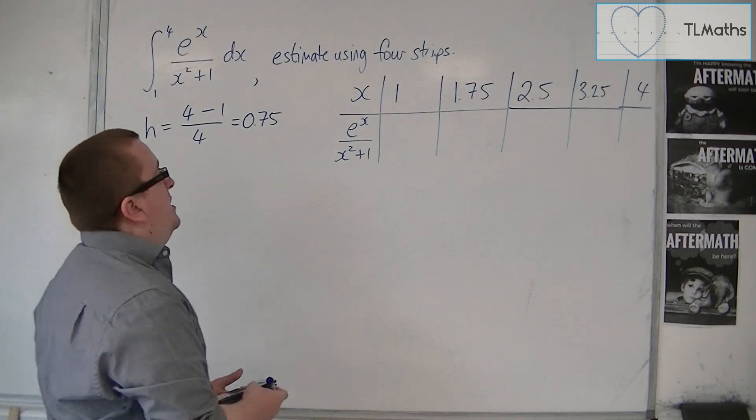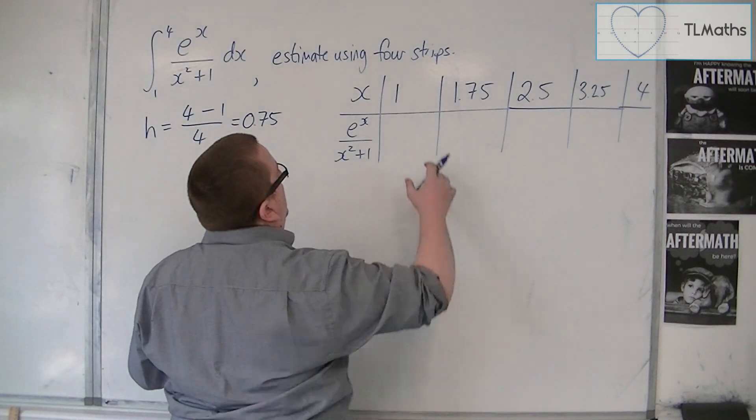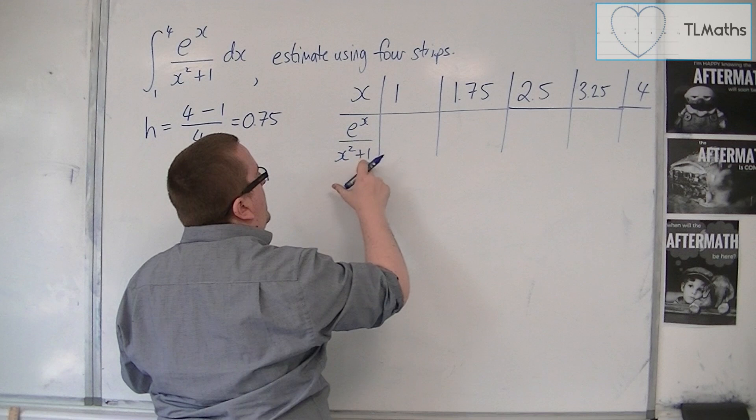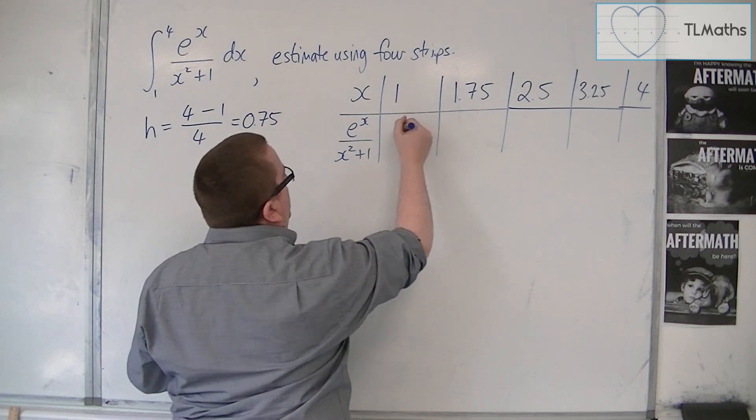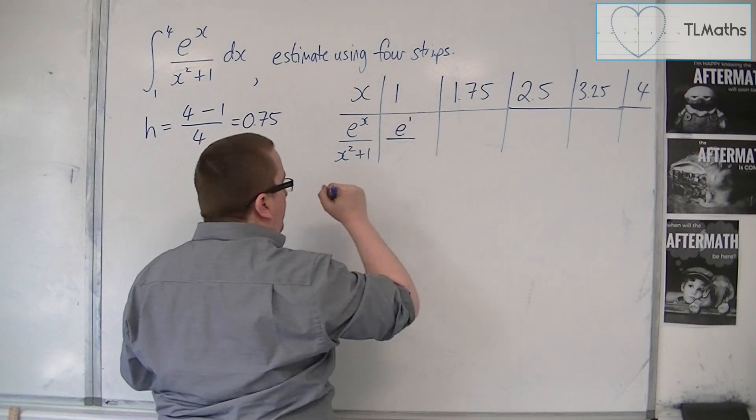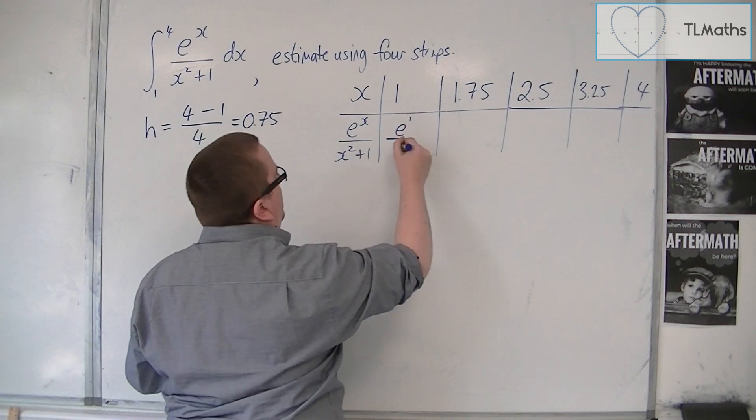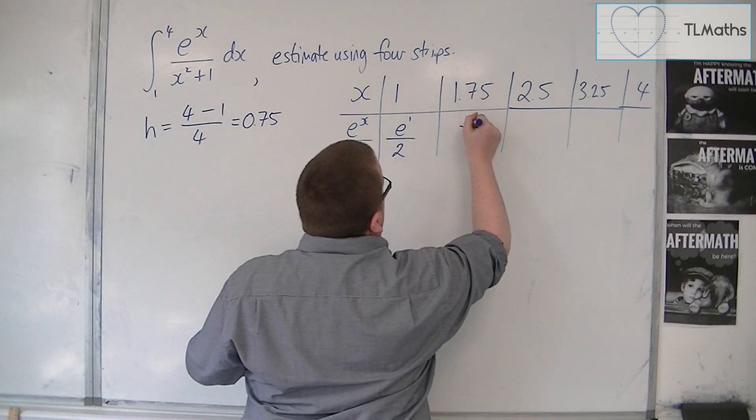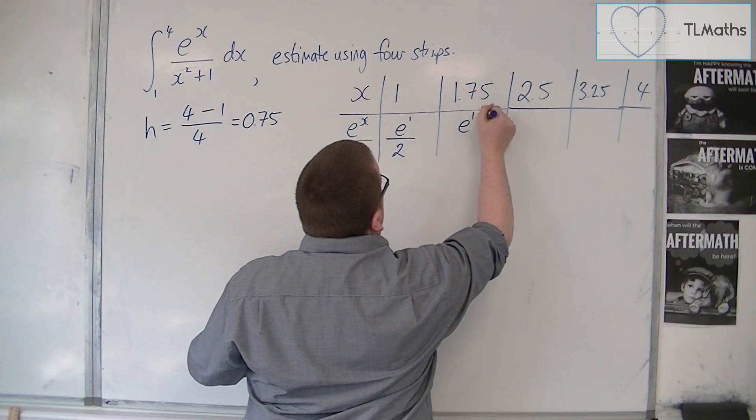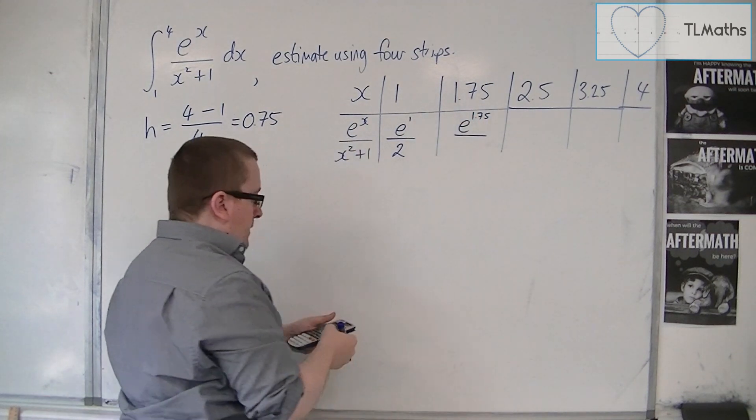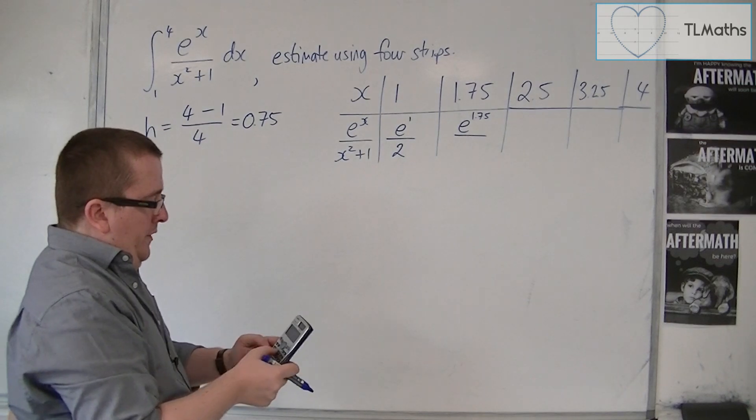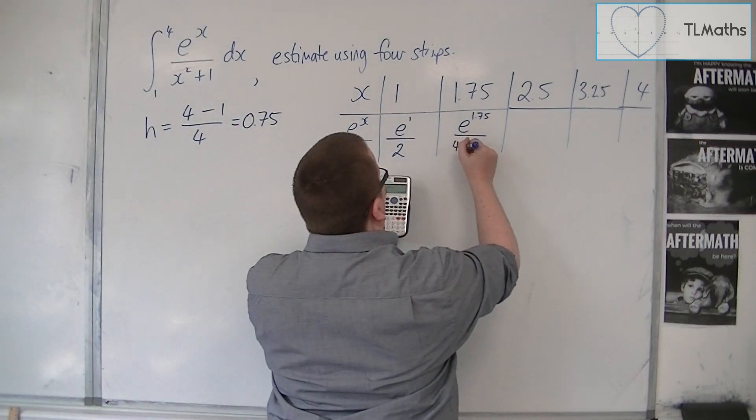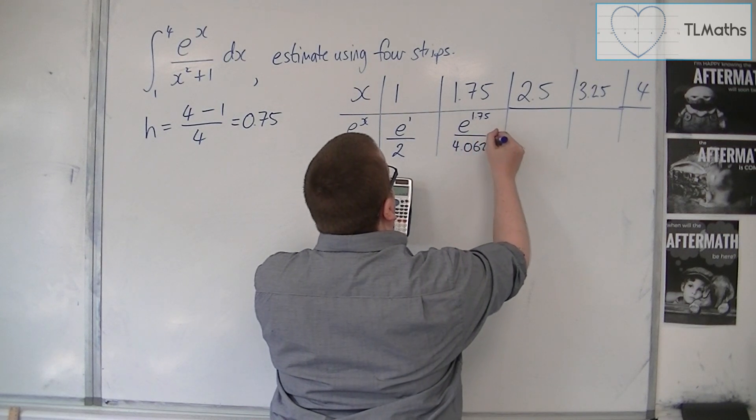So now we just need to substitute in each of these values. When x is 1, we're going to get e to the 1 over 1 squared plus 1, so e to the 1 over 2. When x is 1.75, we're going to get e to the 1.75 over 1.75 squared plus 1, which is 4.0625.